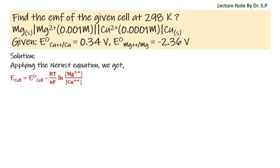Here reduced species is magnesium and oxidized species is copper. Now EMF of cell is equal to potential of cathode 0.34 minus potential of anode minus 2.36 minus 0.0591 by 2 log 0.001 by 0.0001.